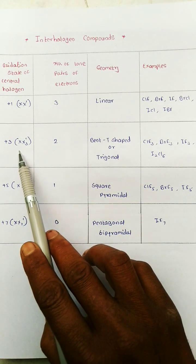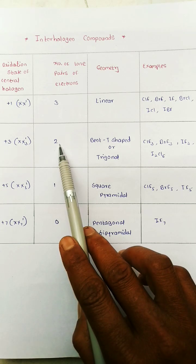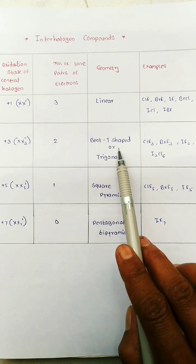Oxidation state of central halogen plus 3, their number of lone pair 2, shape bent, T-shaped or trigonal.